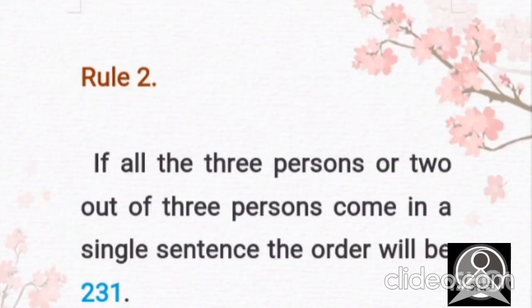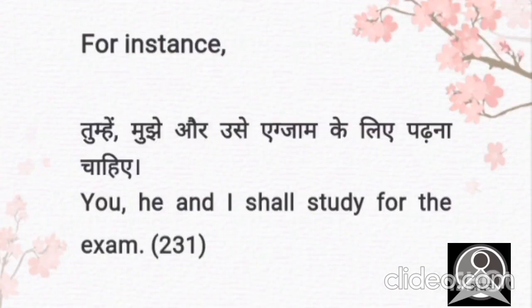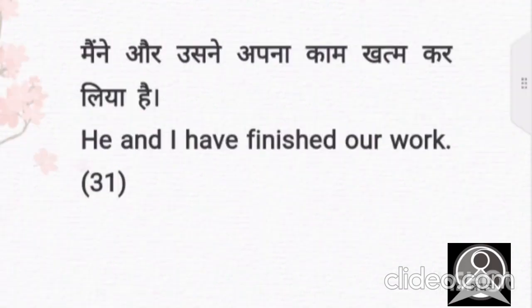Now let's talk about the second rule. If all the three persons or two out of the three persons come in a single sentence, then the order will be 2, 3, 1. Second person, third person, and then the first person. Let's talk about the examples now. You, second person, he, third person, and I, first person, shall study for the exam. I hope this is clear.